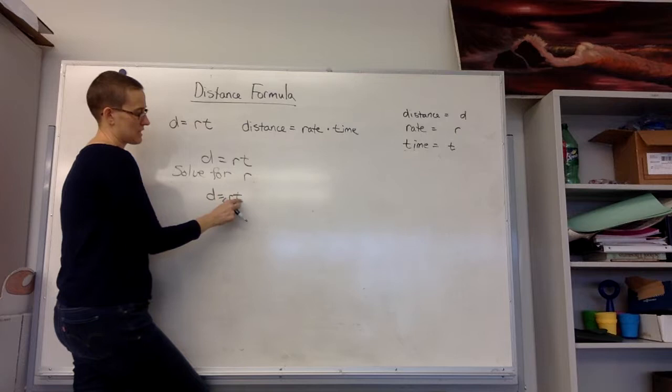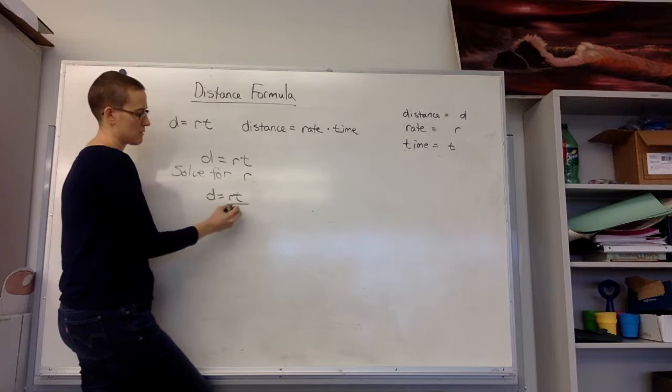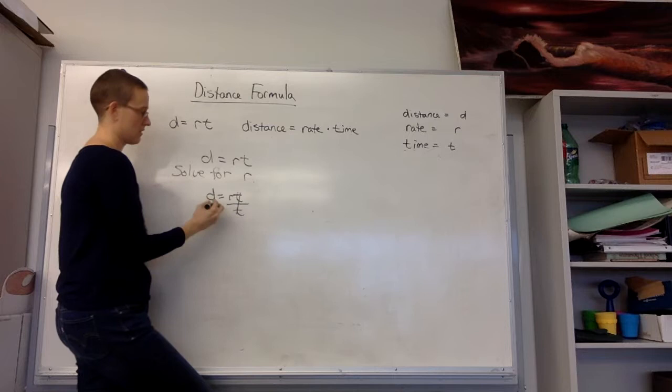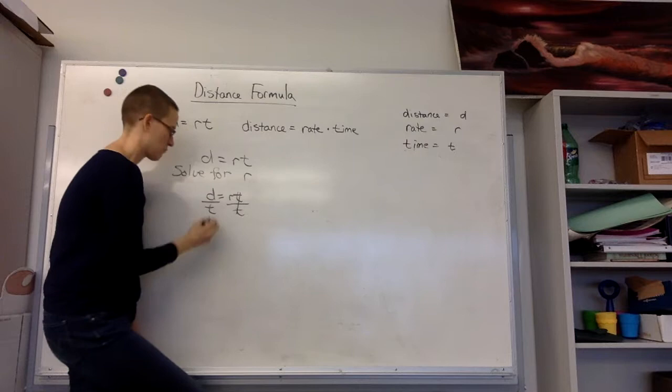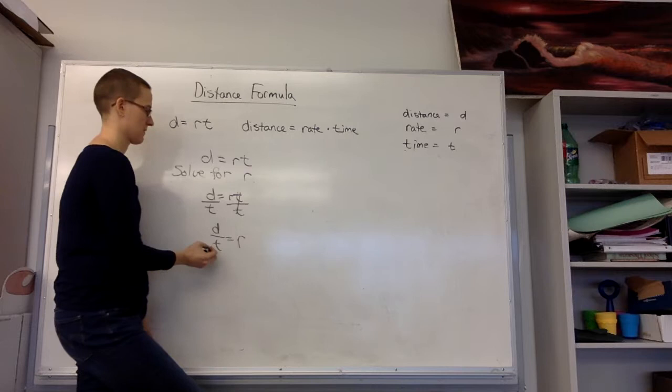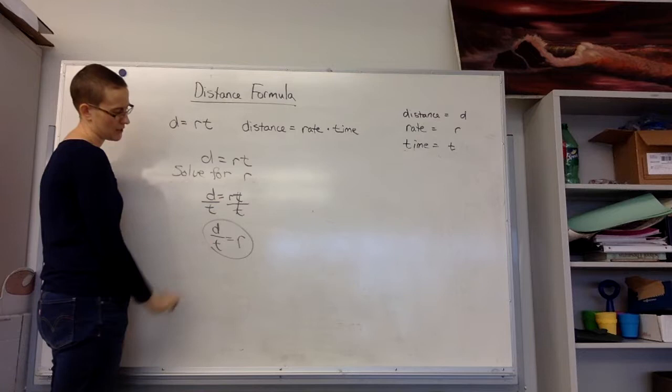If we think about the rules of algebra and we want to get it so that the r is all by itself, we need to get rid of the t. Right now we're multiplying, so to get rid of the t, we have to divide. We divide by t, my t's cancel. But if I do it to this side, I must also do it to this side. When I rewrite this, I have d over t is equal to r.